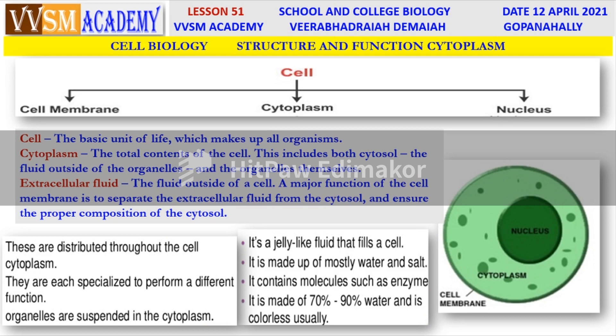As I told you, the cell is mainly divided into cell membrane, cytoplasm, and nucleus. The cell is the basic unit of life, which makes up all organisms. Cytoplasm is the total contents of the cell. This includes both cytosol — the fluid outside the organelles — and the organelles themselves.